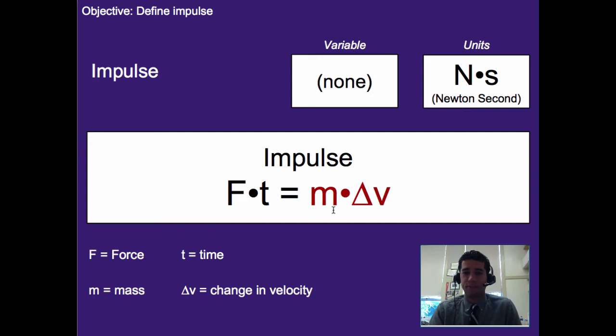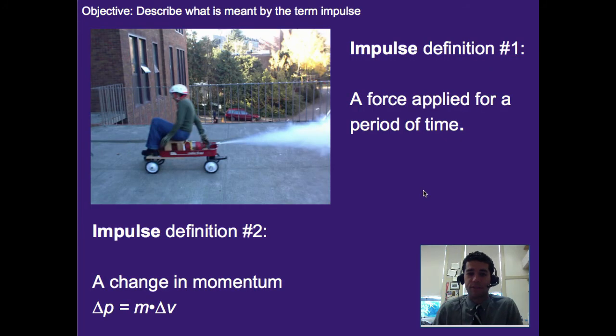which is we've talked about this idea of momentum before. We know that momentum, p, is equal to mass times velocity, so a change in momentum would just be mass times a change in velocity. Really what we're looking at here is the idea that impulse is just a change in momentum. And that gives us to our second and more official definition, which is impulse is a change in momentum.